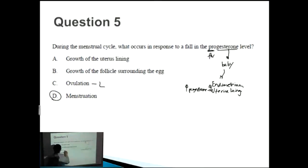Ovulation, that's associated with an increase in LH, luteinizing hormone. B, growth of the follicle surrounding the egg? Note what causes that is actually follicle stimulating hormone. And growth of the uterine lining, well that's actually to do with progesterone but it's an increase in progesterone not a fall.